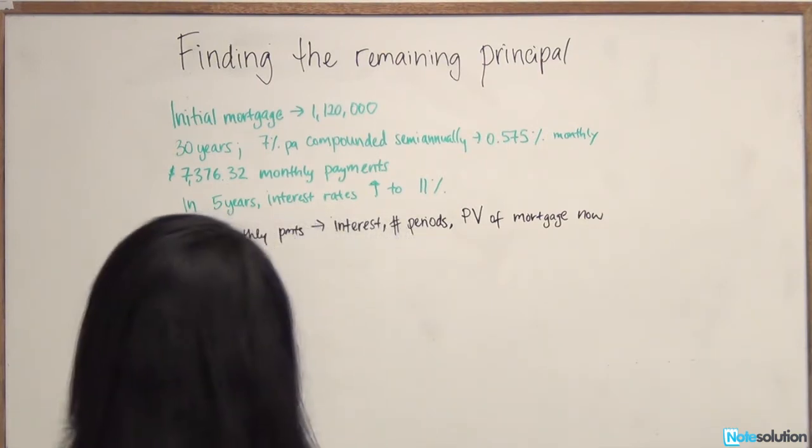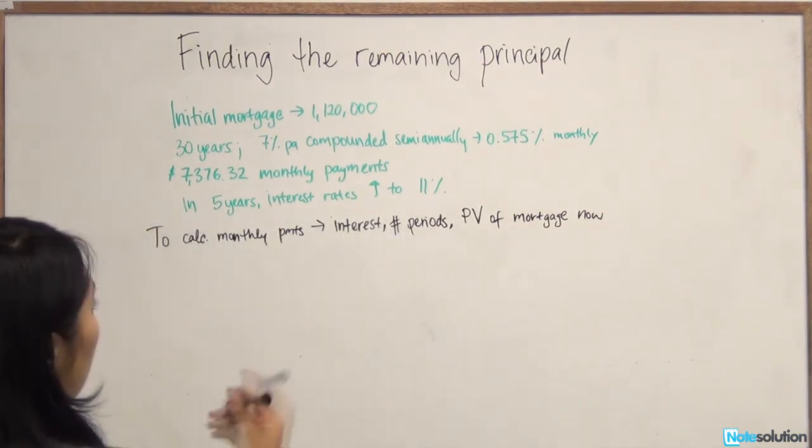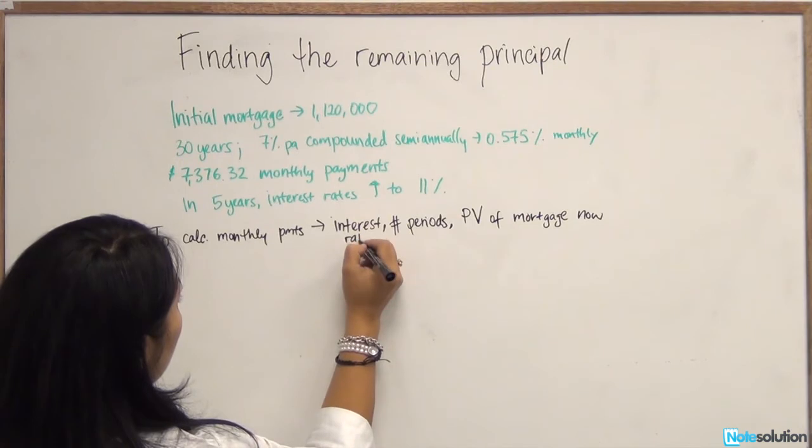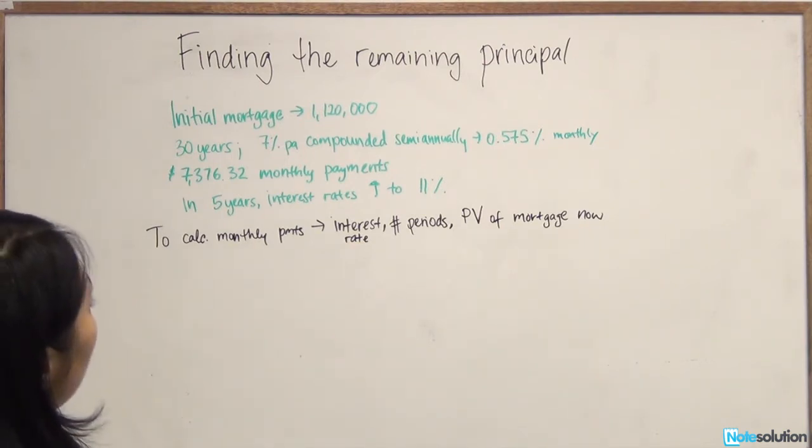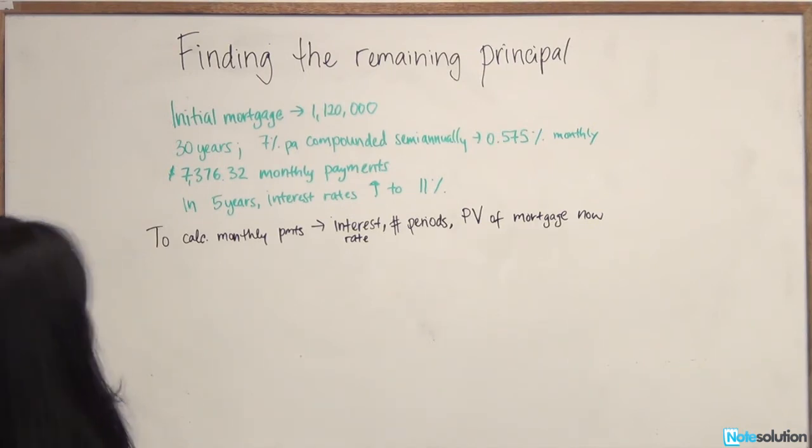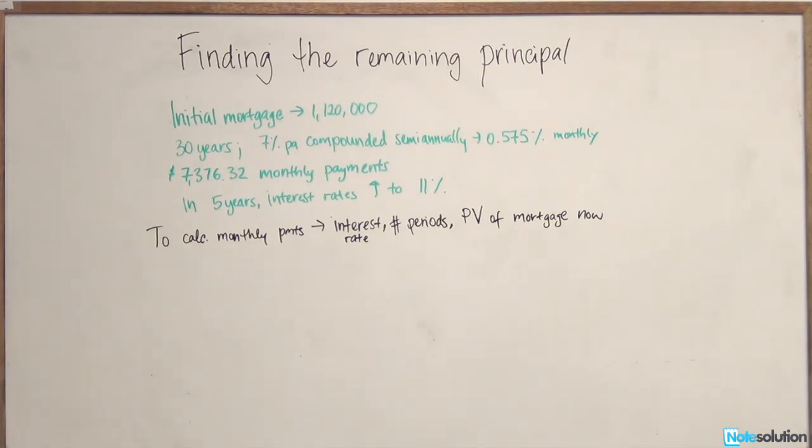So let's review the given information that we already have. We have the interest rates already, 11% compounded semi-annually. It's not in monthly terms yet, but we can easily convert it to monthly terms. We have the number of periods. In the beginning of the mortgage period, the initial term was 30 years, and 5 years have gone by, so the difference between 5 years and 30 years, 25 years remaining.